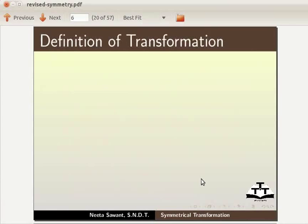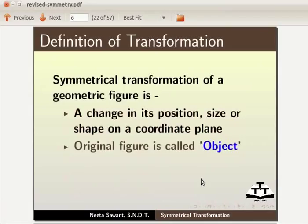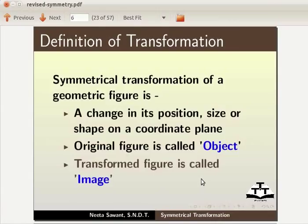Definition of transformation: Symmetrical transformation of a geometric figure is a change in its position, size or shape on a coordinate plane. Original figure is called object. Transform figure is called image.